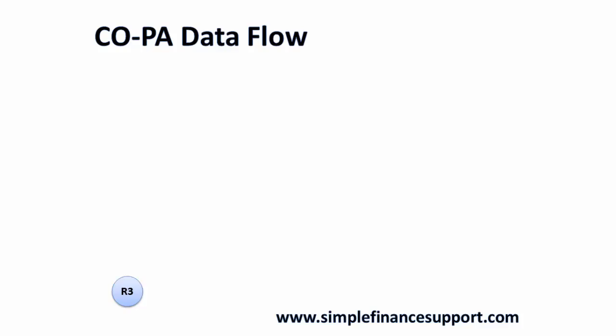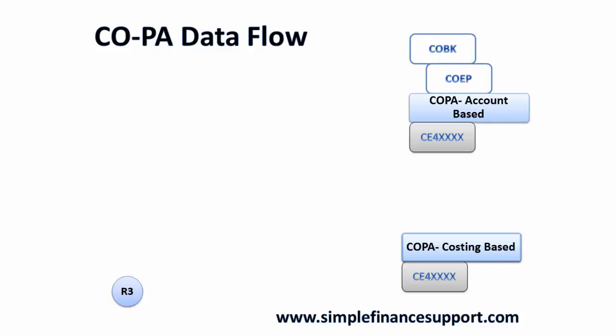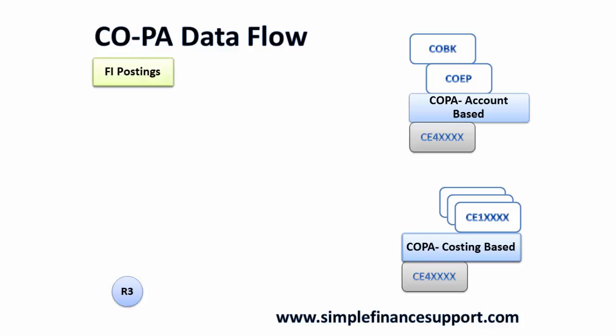In R3 you have two types of COPA modules: account-based COPA and costing-based COPA. Both of these modules need segment-level tables, which are CE4 appended by the operating concern number. Then you have the COBK and COEP tables, which are CO tables to record all COPA account-based data. For COPA costing-based you have CE1, CE2, CE3 tables, also appended by the operating concern. Then there are FI postings.